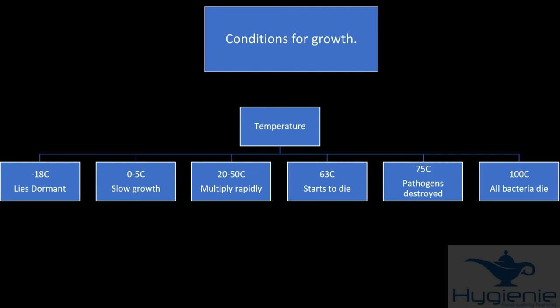Conditions for bacterial growth. Let's focus on temperature. At minus 18 bacteria lies dormant, it's asleep. At 0 to 5 degrees it grows slowly. 20 to 50 degrees it multiplies rapidly. 63 degrees the bacteria starts to die. 75 degrees pathogens are destroyed. And at 100 degrees all bacteria die.